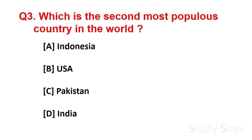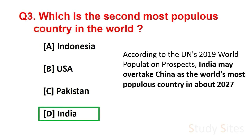Question number 3. Which is the 2nd most populous country in the world? Answer is India. And friends, according to the UN's 2019 World Population Prospect, India may overtake China as the world's most populous country in about 2027.